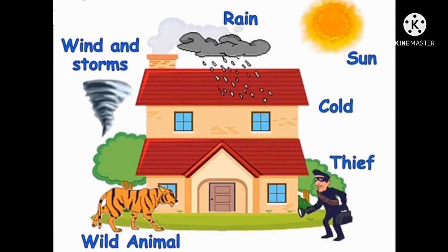Now what is a house? House is a building that is made for people to live in. House is that place where we live with our family and feel safe. It protects us from heat, rain, cold, wind, wild animals and thieves. It keeps us safe. So students, in this chapter we will learn about different types of houses in detail.